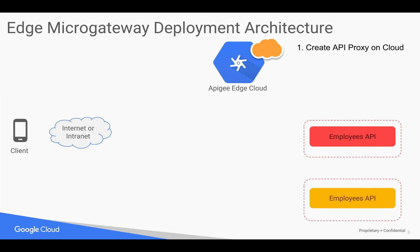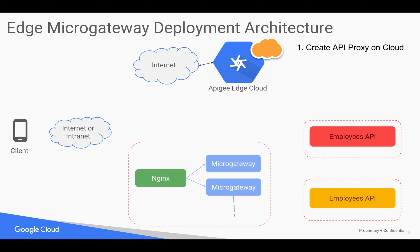The first thing you do is create an API proxy on the cloud — on the Apigee Edge cloud, which is on the internet. Then you install and configure the micro gateways, which can be multiple instances to balance the load using a load balancer like nginx. You can have any number of micro gateway instances running on different machines inside your on-premises environment.